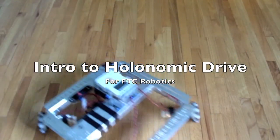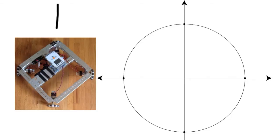Intro to holonomic drive. You can see that the wheels on holonomic drive are oriented in a different fashion. They're at a 45 degree angle where they would normally be.